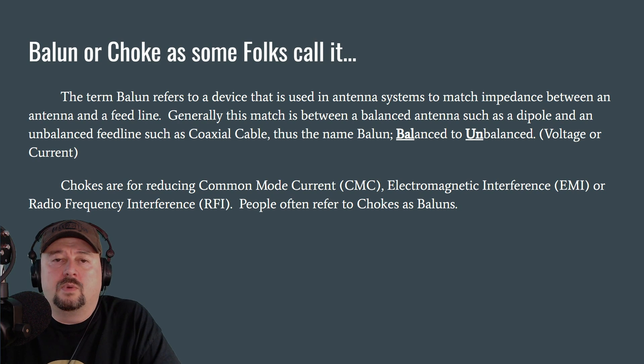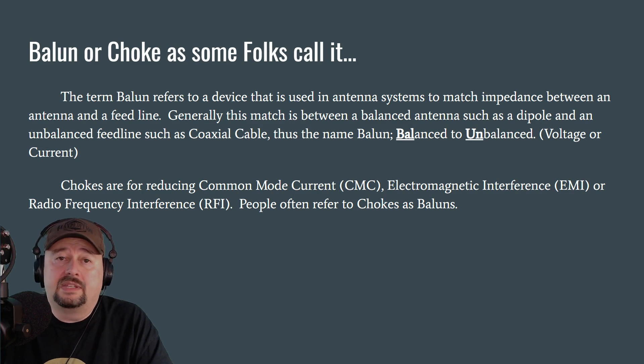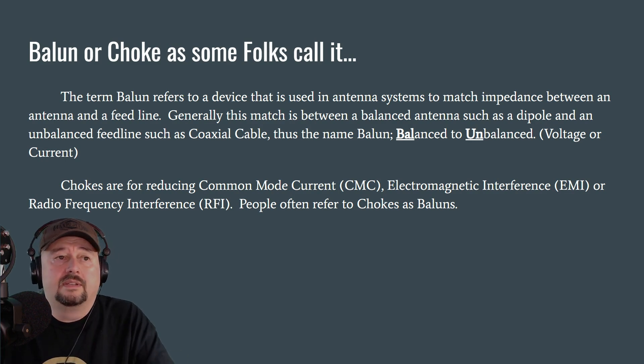So what I mentioned was at the feed point of an antenna, folks will often put a balun or a choke in there. So I wanted to spend a few minutes talking about that. The term balun refers to a device that is used in antenna systems to match impedance between an antenna and a feed line. Generally, this match is between a balanced antenna, such as a dipole. It's balanced because it has two equal legs. And an unbalanced feed line, such as coaxial cable. Coaxial cable is considered unbalanced, and that's where the name balun comes from. It's a combination of the two words, balanced to unbalanced.